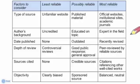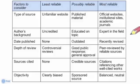For date published: if there's none listed, it's not very reliable; if it's outdated — say five, ten, or fifteen years ago — that's less reliable; you want something recently published or recently revised. For depth of review: is it controversial, does it have good public response and general approval, has it been peer reviewed? For sources cited: no sources cited is not reliable; a few credible sources is better; a full MLA or APA style bibliography is the most reliable option.